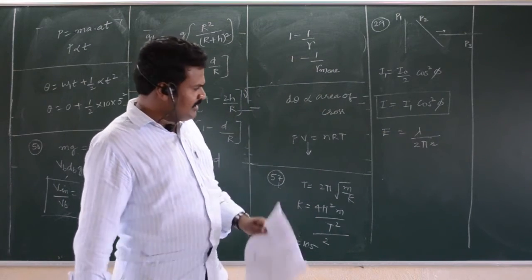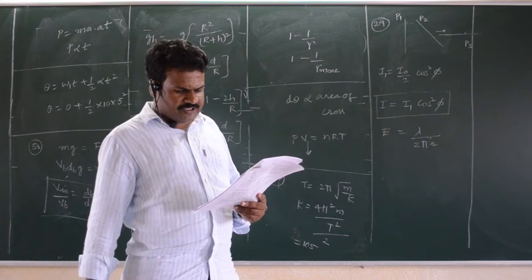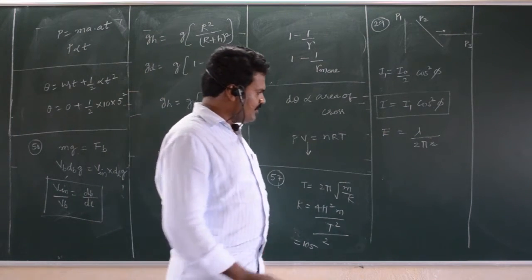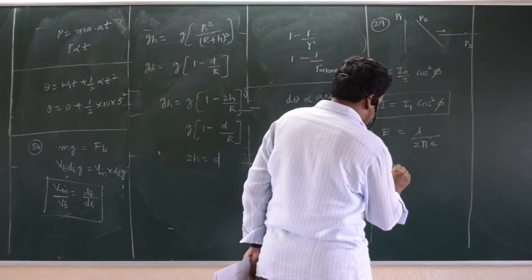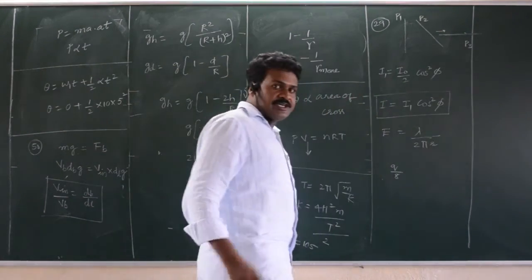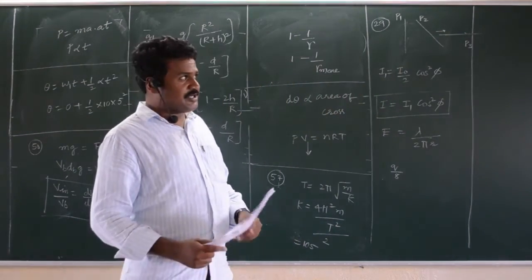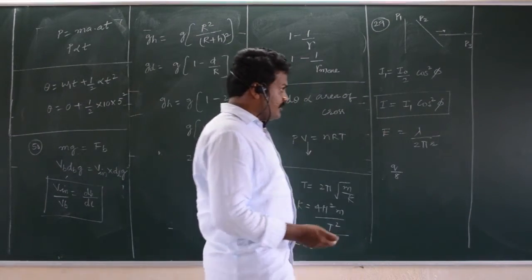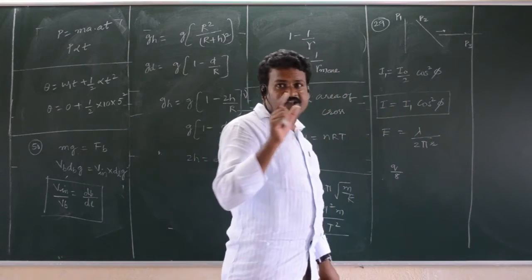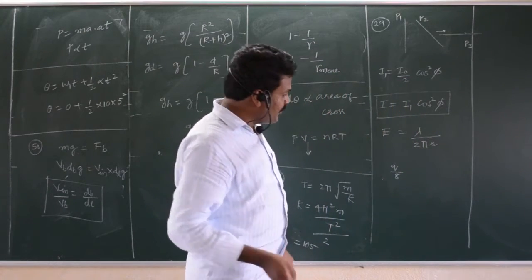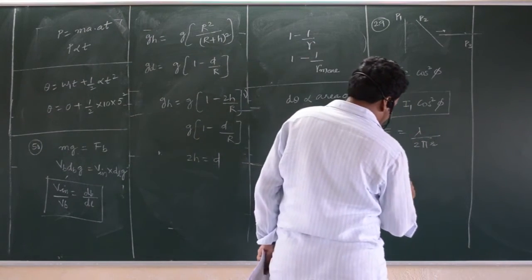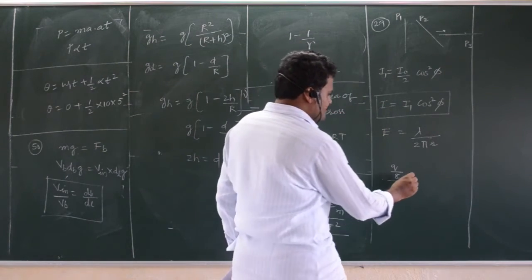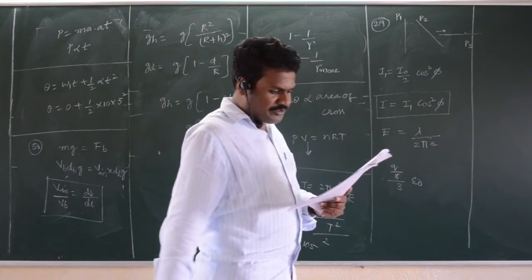Next, question number 59. A charge is kept at the corner. When a charge is kept at the corner, the contribution of that charge to one cube is only Q by 8. It is there in your chemistry also. If a charge is kept at the corner, its contribution to that cube is Q by 8. And from each corner, three surfaces will come. So, Q by 8 by 3 epsilon naught will be answer. That is Q by 24 epsilon naught.